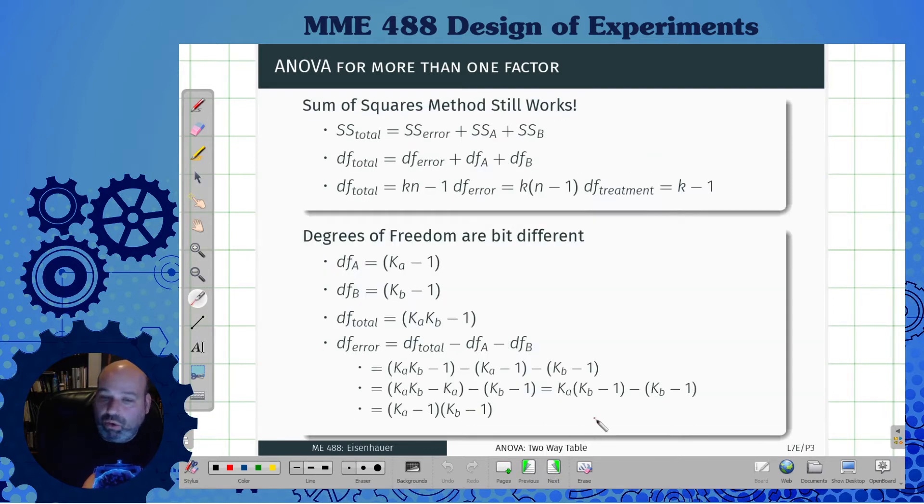So some of the square methods still work. So the idea here is we've just extended it. All we've actually done is added on another term for B on the end. We've added another term for B on the end for the total. The only thing difference here is that we actually, each one has its own degrees of freedom for the treatment.